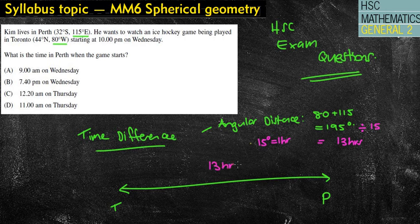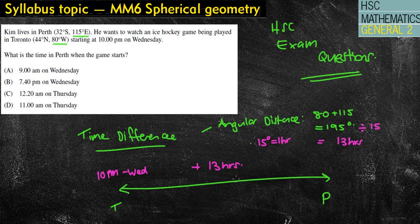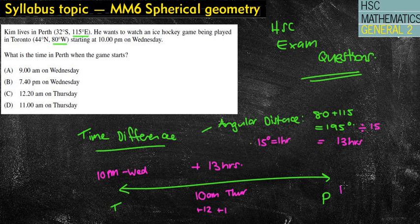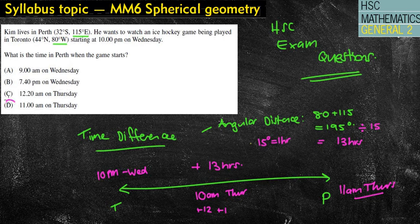We have 13 hours between Toronto and Perth. It's currently 10pm Wednesday in Toronto. Because I'm going to the right, I'm adding the 13 hours. If I add 12 hours to 10pm Wednesday, that gets me 10am Thursday, but that's 12 hours. So I need to add one more hour. That brings me to 11am on Thursday, which brings out the answer of D.